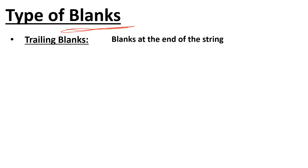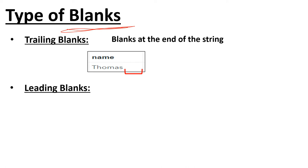There are kinds of blanks which are universally used. First comes trailing blanks — blanks at the end of the string. For example, the name 'Thomas' — the blank space at the end is referred to as trailing blanks.